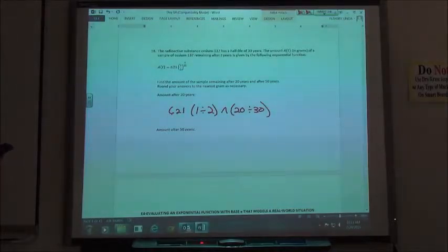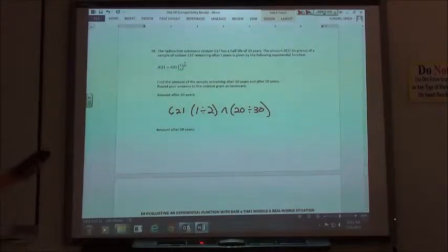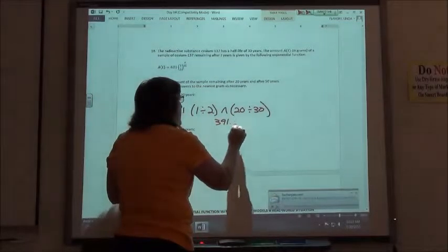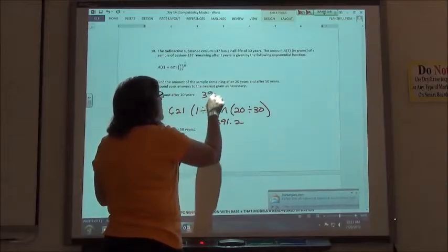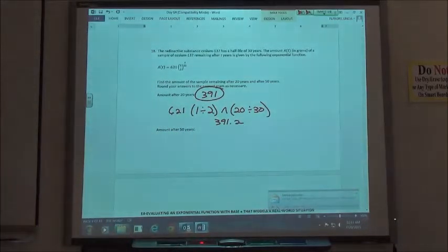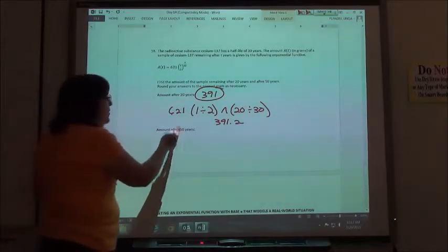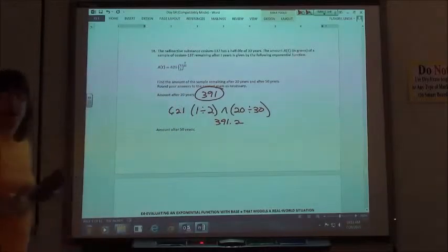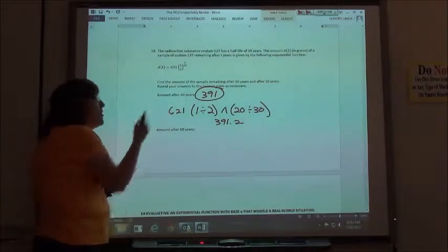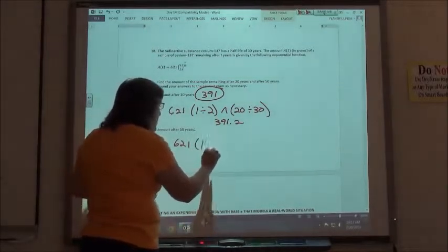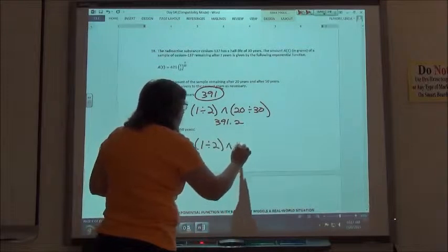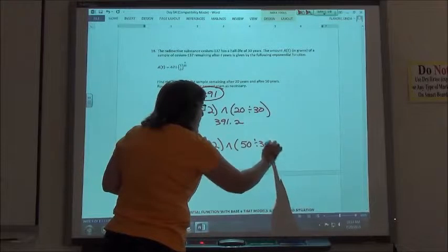So after 20 years, we're not quite going to do one half-life, because a half-life is 30 years. 621, my one-half to the 20 out of 30. So, 621 times one-half to the 20 out of 30, and I get 391.2. So, 391 would be my answer to the nearest gram. If we didn't quite do a half-life, we got a little more than a half left.